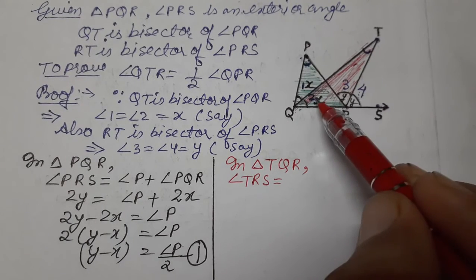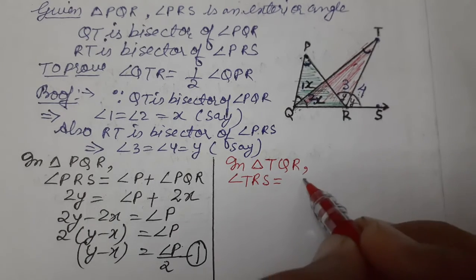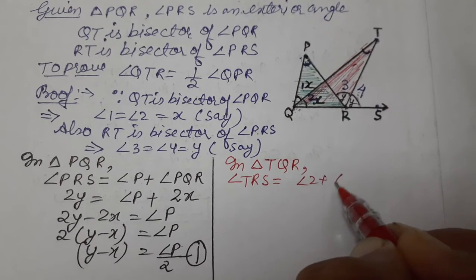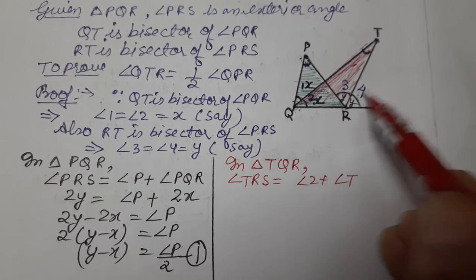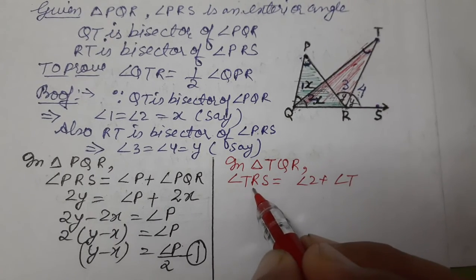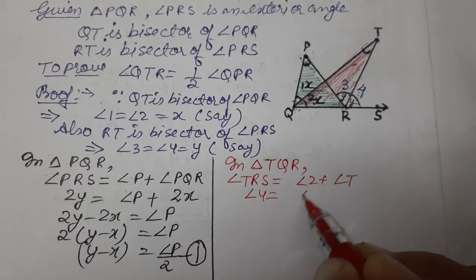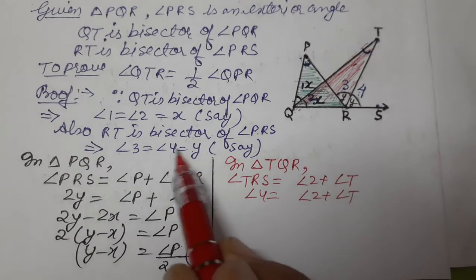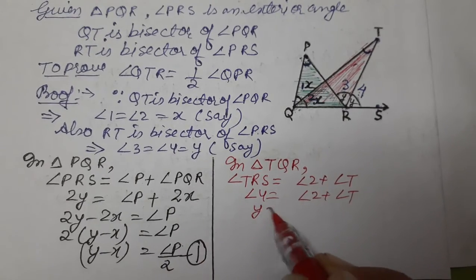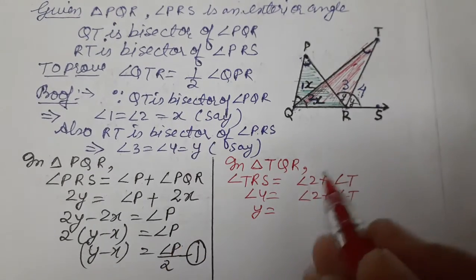The exterior angle TRS equals the sum of two interior opposite angles, means angle 2 plus angle T. Angle 4 equals angle 2 plus angle T. Angle 4 we assumed as y.